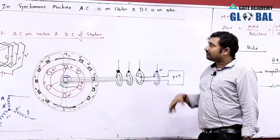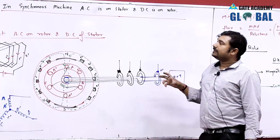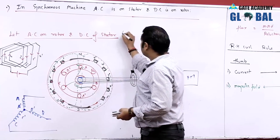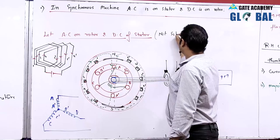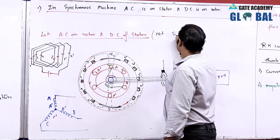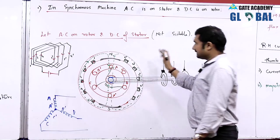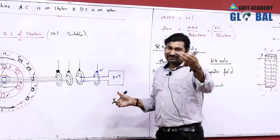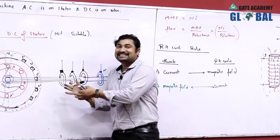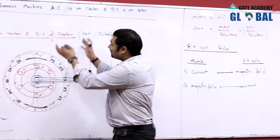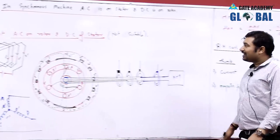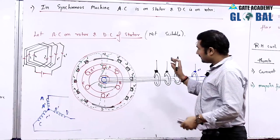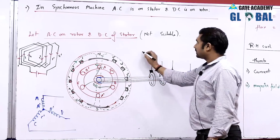Presently, our discussion is about why AC on the rotor and DC on the stator is not suitable. Let us suppose this generator is of 200 MVA and 11 kV. The per-phase voltage is 11/√3 kV, and the current that can be supplied is I = 200×10⁶ / (√3 × 11×10³). This current is in kilo-amperes.